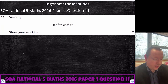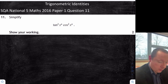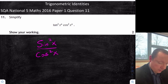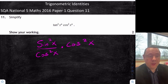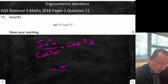2016 National 5 Maths Paper 1 Question 11: simplify tan²x − tan²x·cos²x. We've got tan and cos squared, so we can change tan into sin/cos. Step 1: replace tan²x with sin²x/cos²x, then multiply by cos²x. The cos²x terms cancel out, giving a final answer of sin²x.